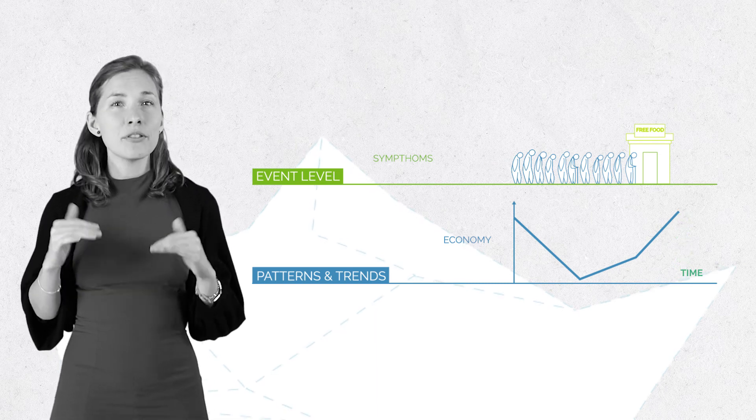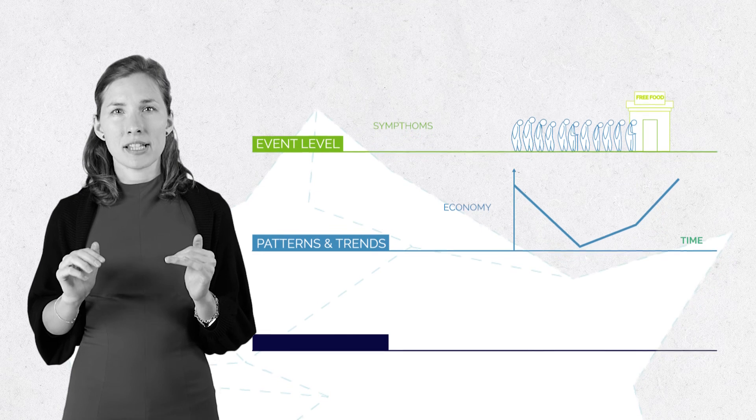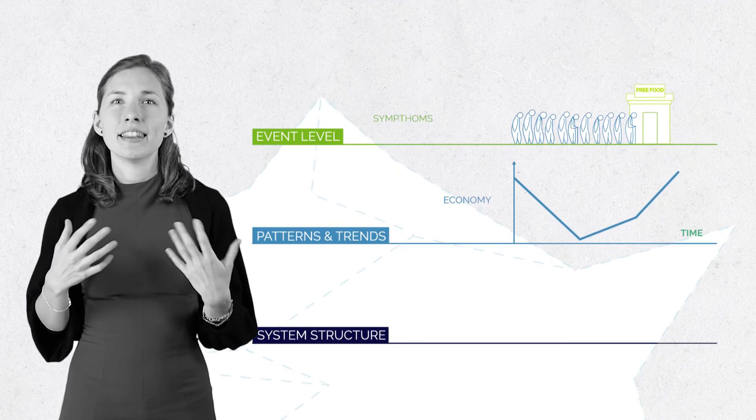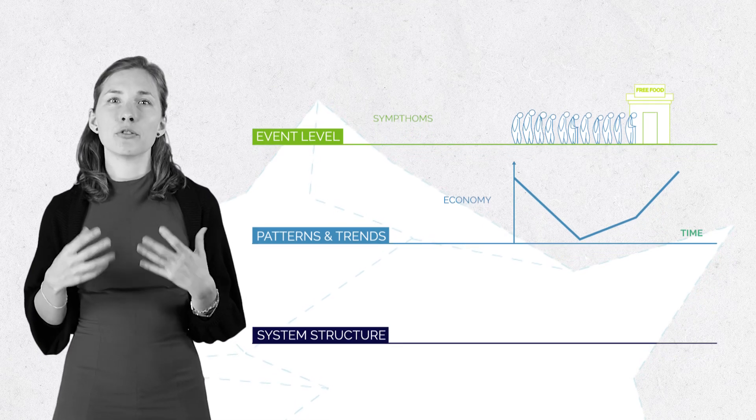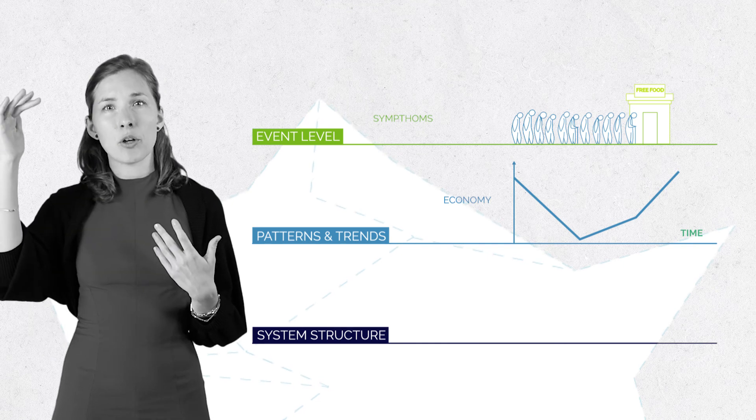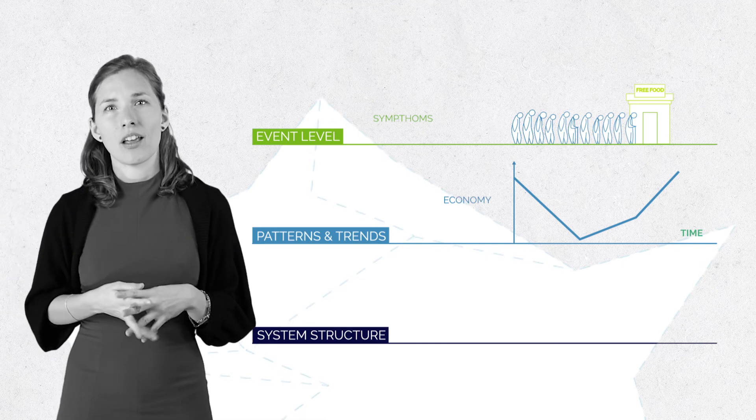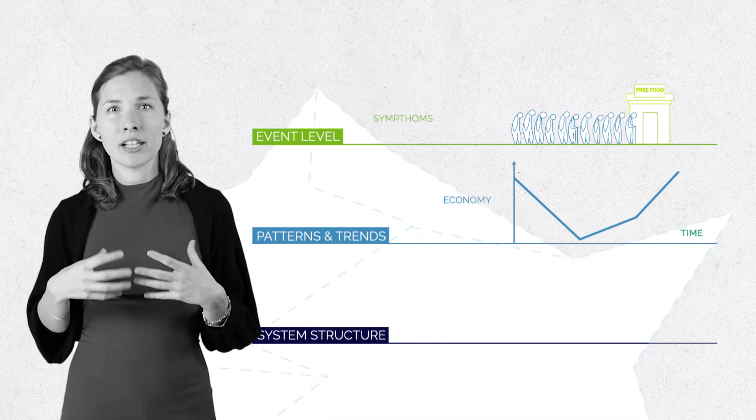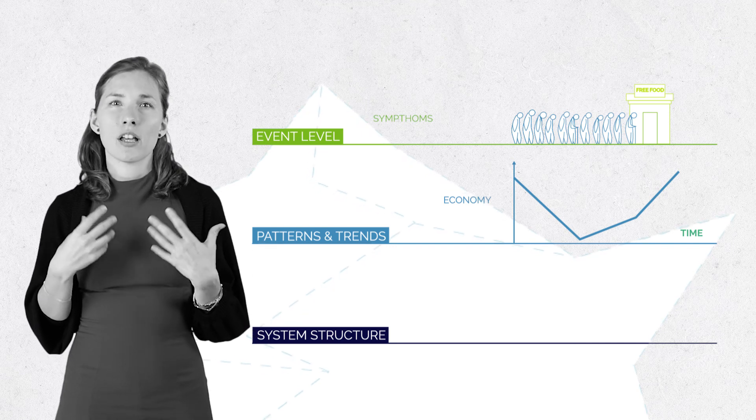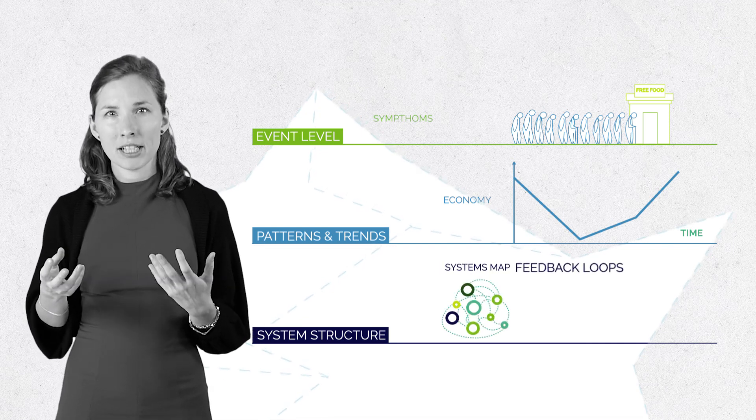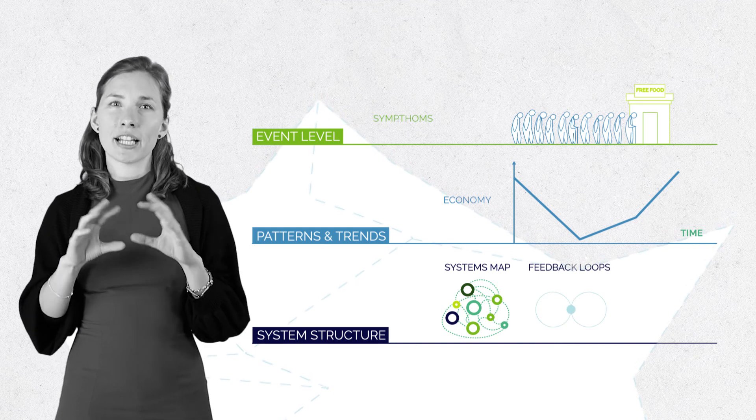If we descend even deeper, we arrive at the level of system structure. At this level, we are trying to figure out the root causes behind symptoms and patterns. Many of the tools that we are learning in this course, such as systems mapping or feedback loops, are actually working at this level.